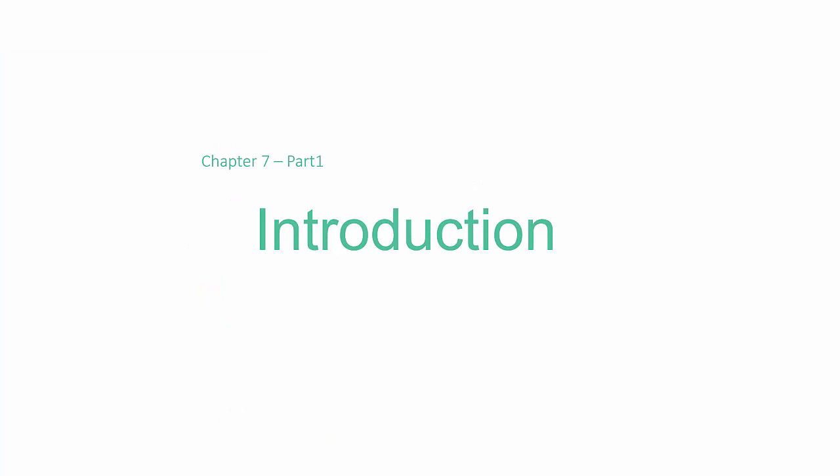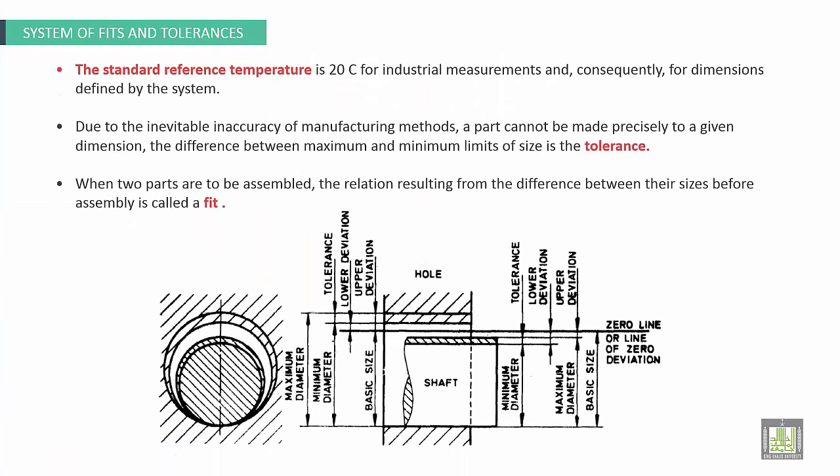Starting with the introduction: System of Fit and Tolerances. The standard reference temperature is 20 degrees centigrade for industrial measurement and consequently for dimensions defined by the system. Due to the inevitable inaccuracy of manufacturing methods, a part cannot be made precisely to a given dimension. The difference between maximum and minimum limits of size is the tolerance.